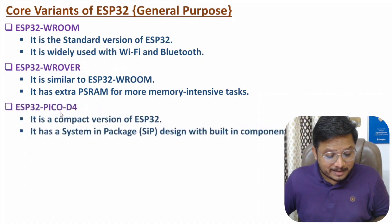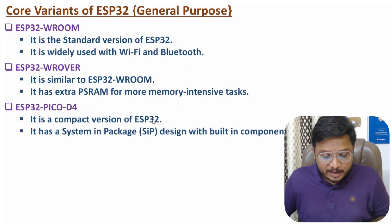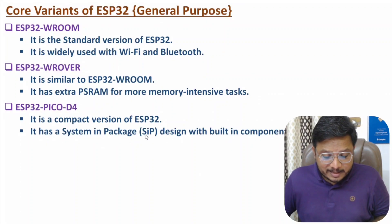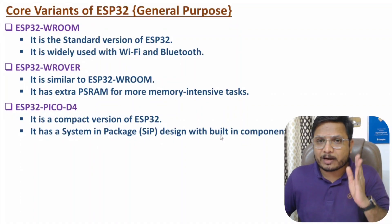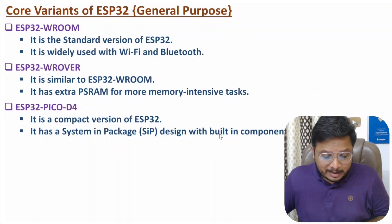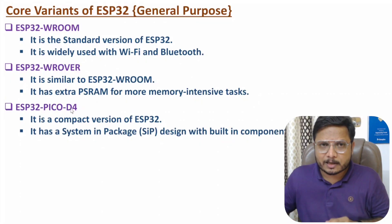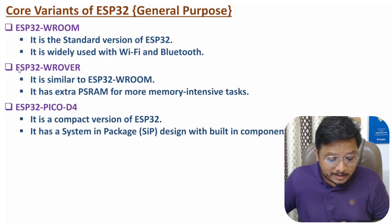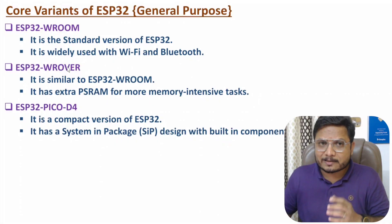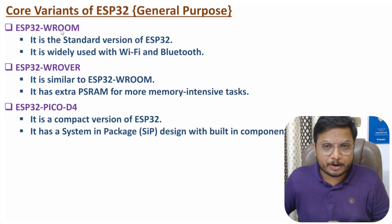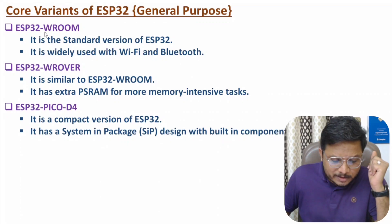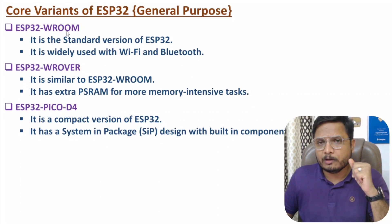The third core variant is ESP32 Pico D4. It is a compact version of ESP32. It has a system-in-package design with built-in components. So if you have a constraint based on size, then one can prefer ESP32 Pico D4. If you want memory intensive tasks, then one can go for ESP32 WROVER. And for standard tasks, one can prefer ESP32 WROOM module. In this video lecture series, I'll be using ESP32 WROOM module for project development.